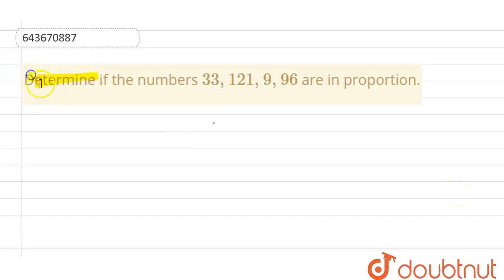We have the question in which we have to determine if the numbers 33, 121, 9, and 96 are in proportion. So we have four numbers: 33, 121, 9, and 96. If they are in proportion, we can write it like 33 is to 121 as 9 is to 96, so 33 divided by 121.